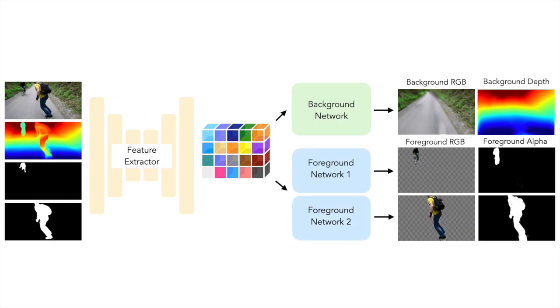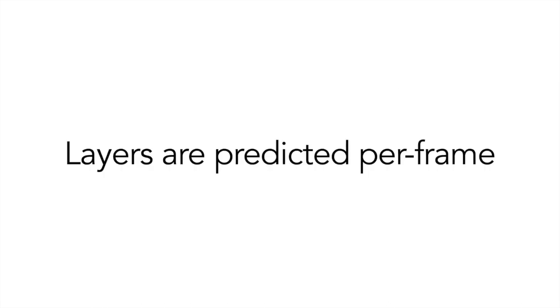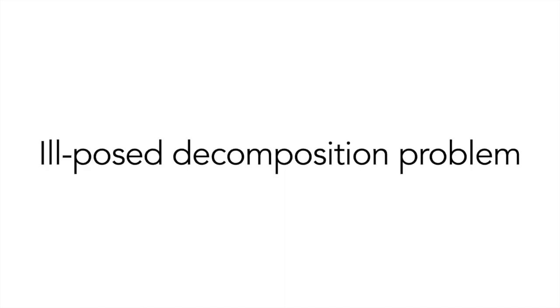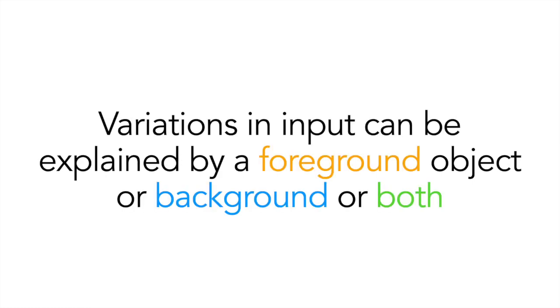Here, we show an overview of the model. We use separate networks for each foreground layer to allow for easier association of objects and their effects. Since our model predicts the layers on a per-frame basis without any global static canvas, the problem of layer decomposition becomes severely ill-posed, as variations in the frame can be explained by changes in the background or foreground or both background and foreground.